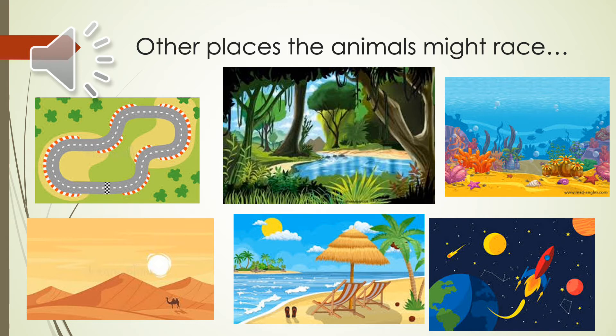They might be having an underwater race, so you have to think about what types of animals might be taking part if it's an underwater race. They might be racing across the desert, up and down the mountains under the hot sun, or they might be racing across the beach around the palm trees and across the sea.